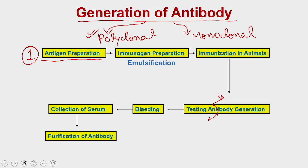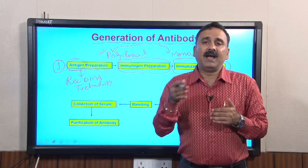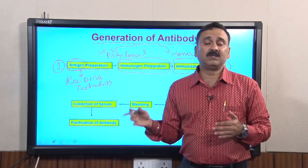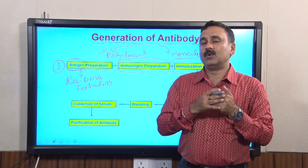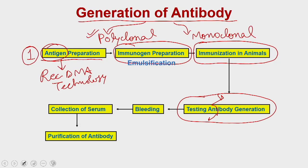The first step is to prepare the antigen. Antigen preparation may require that you clone the particular antigen into an expression system using recombinant DNA technology, allowing you to produce the antigen in large quantity. Once you have produced the antigen, you generate an immunogen preparation — converting the antigen into the immunogen — and then use that immunogen to immunize the animals. First you do a primary immunization, and after some time you do booster immunizations, then test for the presence of antibodies.